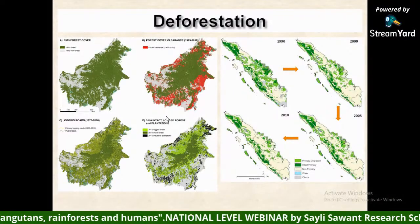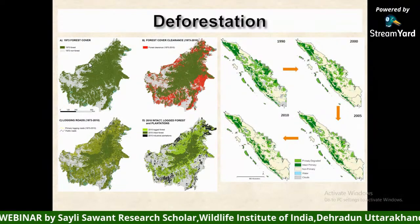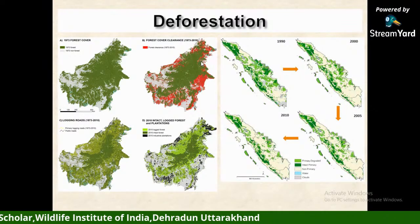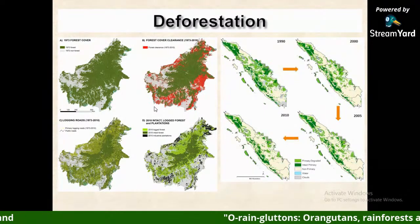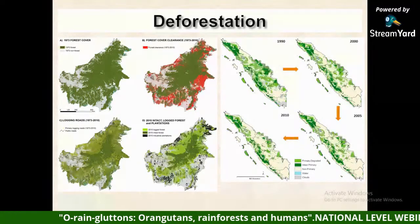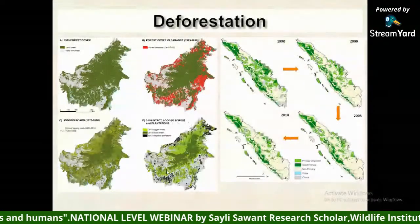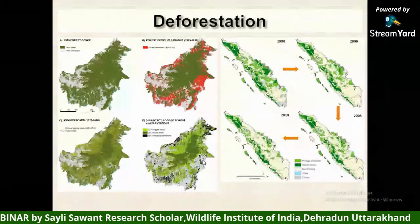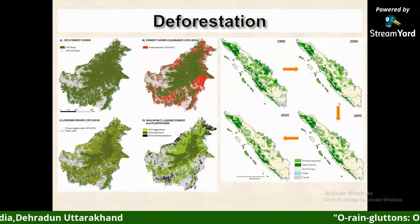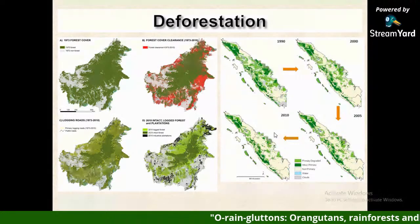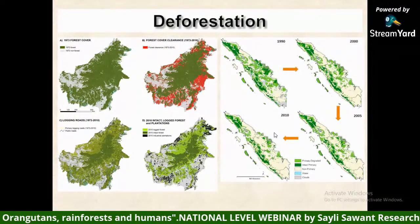Looking at deforestation maps — this is Borneo and this is Sumatra. The 1973 forest cover versus forest clearance from 1973 to 2010 is shown in red. Comparing the orangutan distribution map with these deforestation patterns, the very areas where orangutans live are the areas being destroyed. The same pattern holds for Sumatra from 1990 through 2010. Studies show almost 30 to 40 percent of the entire orangutan habitat has been destroyed in the past few decades.